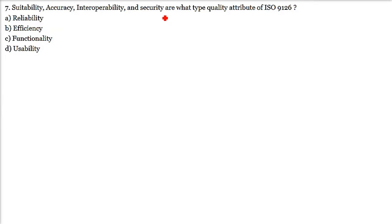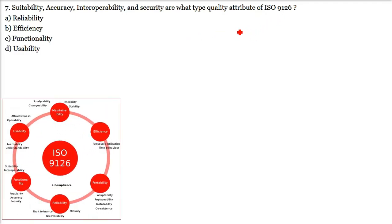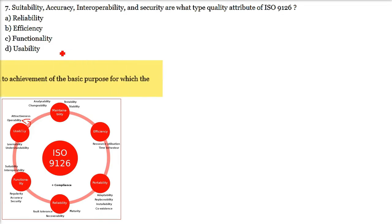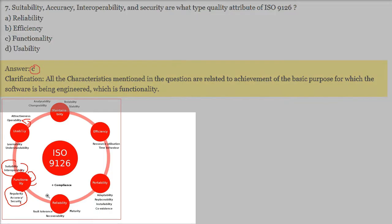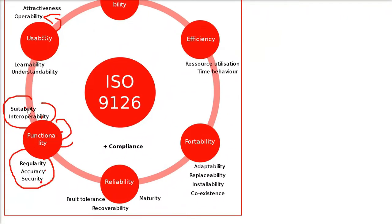What type of quality attribute does ISO 9126 define? ISO 9126 has six major quality attributes, each with sub-factors. Under the functionality attribute, the sub-factors include suitability, accuracy, interoperability, and security. These all come under the functionality part of ISO 9126.